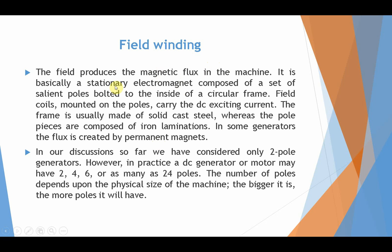The field winding produces the main flux in the machine. It is stationary, meaning the poles do not move. There are two types: salient pole and non-salient pole generators. The field coils mounted on the pole shoes carry the DC excitation current. In our discussion so far, we have considered only two-pole generators. However, in practice, a DC generator or motor may have two, four, six, or eight poles. The number of poles depends upon the physical size of the machine — the bigger it is, the more poles it will have.